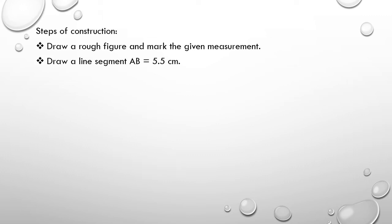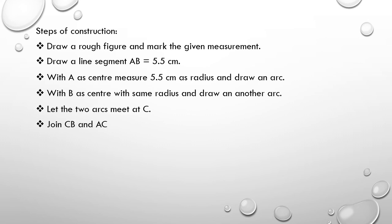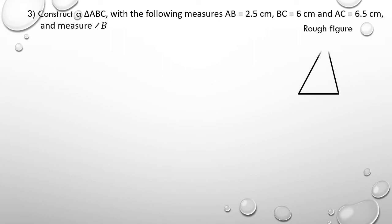Again, write the steps of construction in the instruction mode. Now let us see how to construct a triangle ABC with AB = 2.5 centimeter, BC = 6 centimeter, and AC = 6.5 centimeter, and we need to measure angle B. Draw a rough figure, name the triangle as ABC, and write the given measurements.